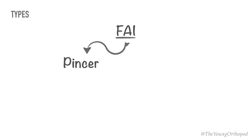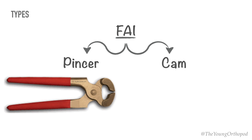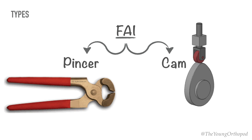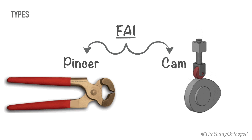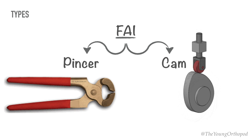Two basic types of impingement have been described: the pincer type and the cam type. A pincer is a metal tool with blunt concave jaws used for gripping and pulling things. A cam is a projection on a rotating part in machinery, designed to make sliding contact with another part while rotating.